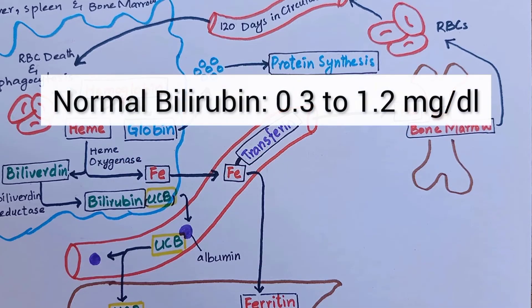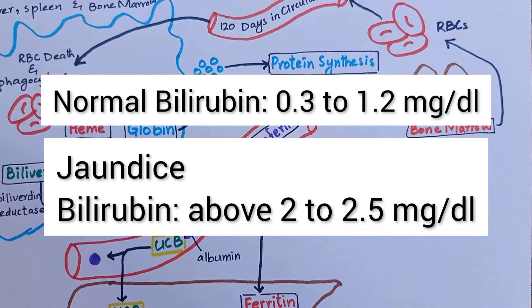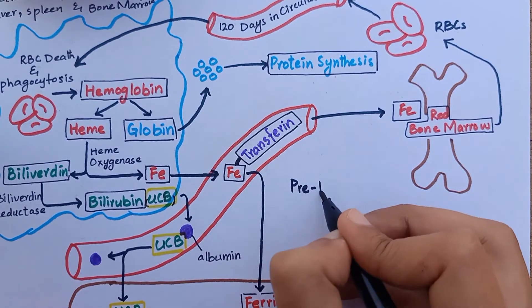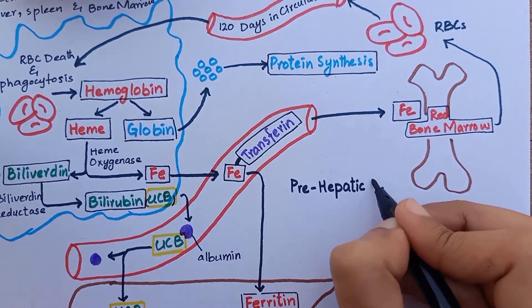Normal serum bilirubin levels in a healthy adult are 0.3 to 1.2 mg per deciliter. Jaundice becomes evident when serum bilirubin levels rise above 2 to 2.5 mg per deciliter. Jaundice can be categorized into three groups.